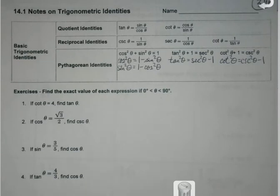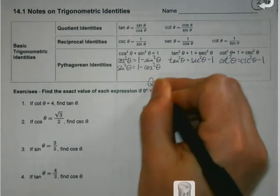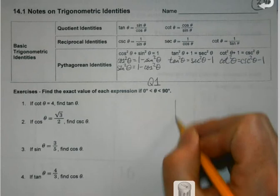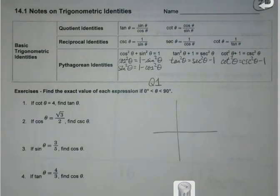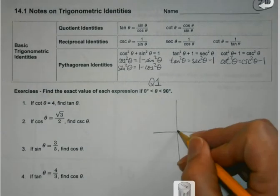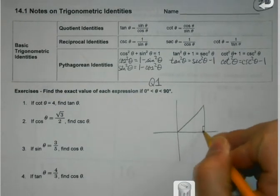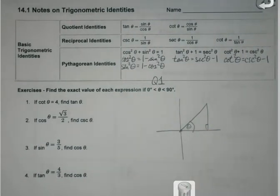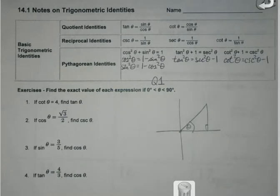For this first part, we're going to be looking for exact values, so no decimals, of each expression if my theta is between 0 and 90. In other words, if it's in quadrant 1. One thing we know about everything in quadrant 1 is everything's positive. We are going to have a triangle that is going to look something like this, with our reference angle base at the origin.